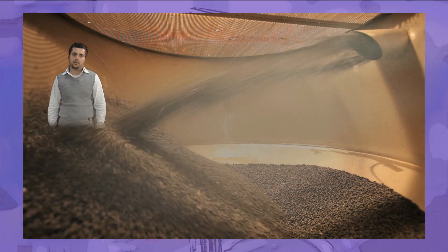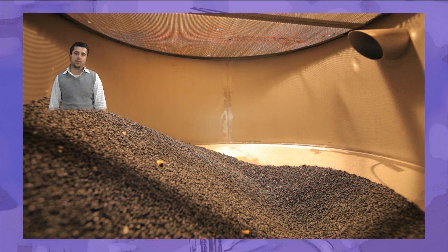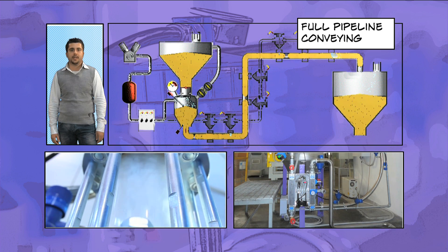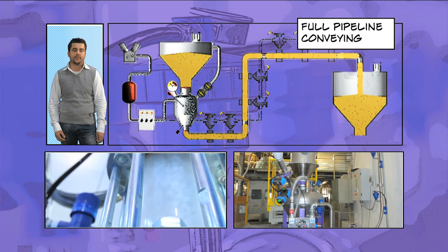In standard transport the pipe is emptied after each conveying cycle. However, in full pipeline transport the line remains saturated to reduce cycle times and improve system performance.